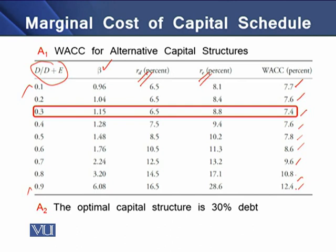The answer to question two is that we need to determine the optimal capital structure at which the company is incurring the lowest possible cost of capital. Looking at the table, we can see that at a capital structure where the level of debt is 30%, the overall cost of capital is 7.4%, which is the lowest in this schedule. So the optimal capital structure is 30% debt and 70% equity, because at this 30/70 capital structure the company is incurring the lowest possible cost of capital of 7.4%.